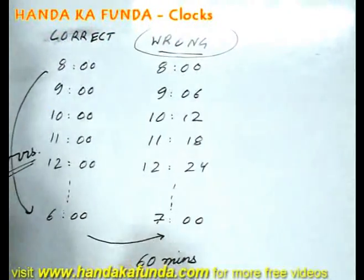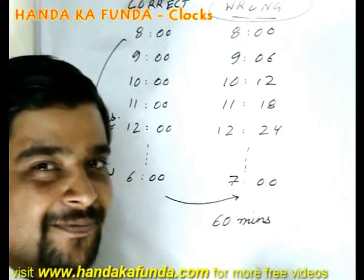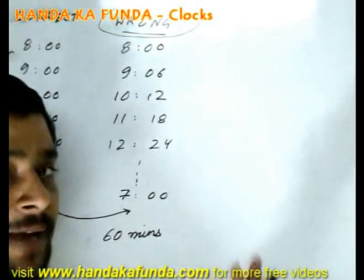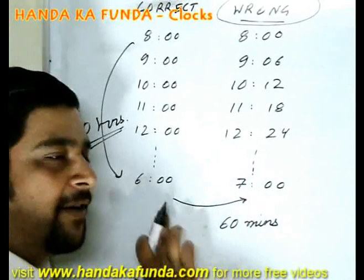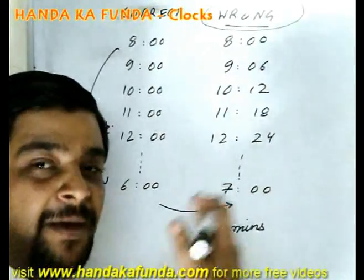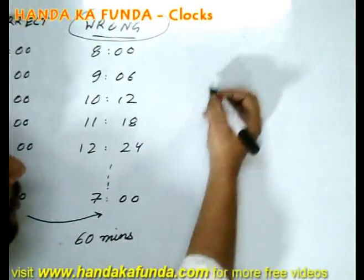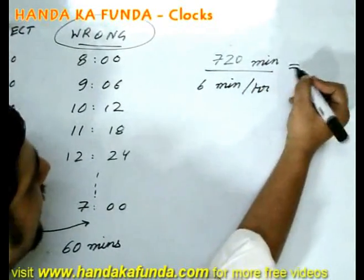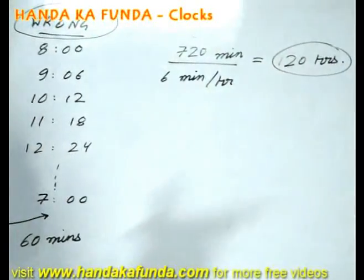Will the wrong clock ever show the correct time again? Even a stopped clock is right twice a day, so this one, which is at least moving, definitely will. The key is figuring out when it will have gained exactly 12 hours, or 720 minutes. If it is 1 hour ahead it shows 7, if 12 hours ahead it still shows 6 — one complete cycle ahead but the correct time. Gaining 6 minutes per hour, it takes 120 hours to gain 720 minutes, so after 120 hours it shows the correct time again.